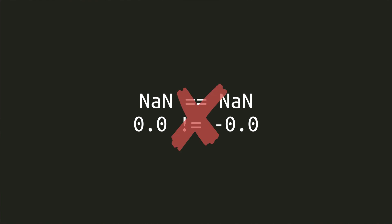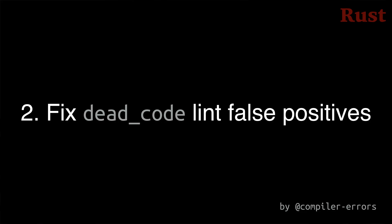But those are both wrong. By definition, NaN is not equal to anything, not even itself. And by definition, 0.0 and negative 0.0 are equal. This has now been fixed. Change 2 reverts some false positives introduced to the dead code lint in Rust 1.80. Nobody loves false positives. That's it for the hotfix changes.